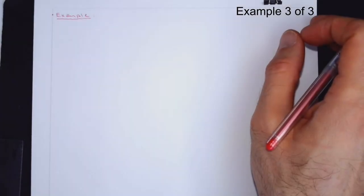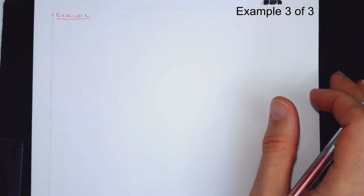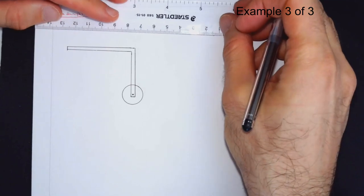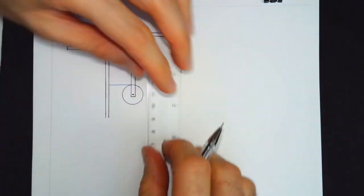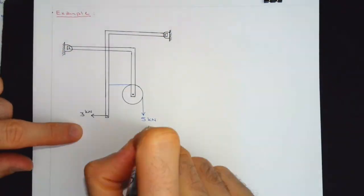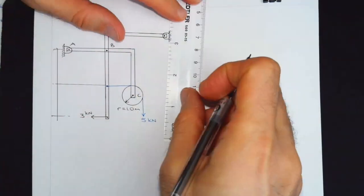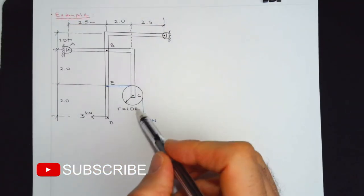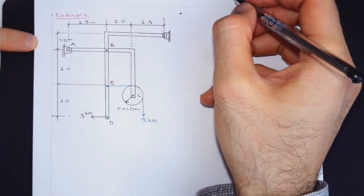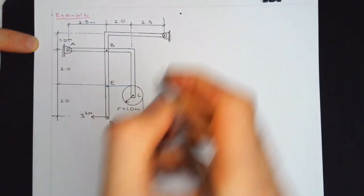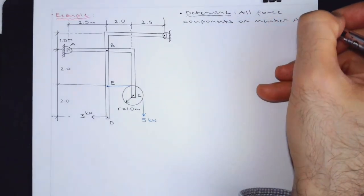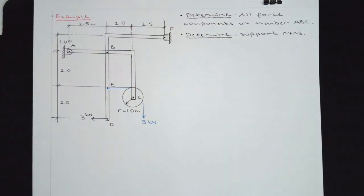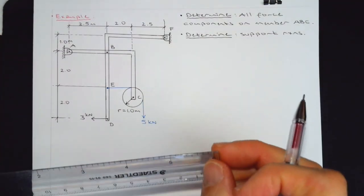This is my final question. We are going to be looking at a frame pulley system. It's a little bit more involved, but we should be able to develop a strategy and then get this solved. This is the system. As you can see, we have a pulley, one cable. Pulley is connected to member ABC. The question is determine all force components on member ABC. Member ABC is this L-shaped member. Since we are doing this, I would like to add another part. Determine all support reactions. Relatively complicated looking problem. Let's first of all talk about strategy.